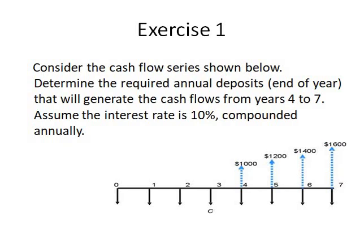Today we will solve exercises related to gradient. Let's begin with Exercise 1. Consider this cash flow diagram presented below. You need to determine the required annual deposits that will generate the cash flow from year 4 to 7. Assume that the interest rate is 10%.